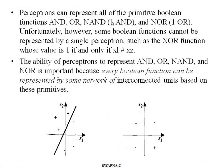A Perceptron can represent all primitive Boolean functions: AND, OR, and NOT. Unfortunately, some Boolean functions cannot be represented with a single perceptron, such as XOR. The ability of perceptrons to represent AND, OR, NAND, and NOT is important because every Boolean function can be represented with a network of such interconnected units.